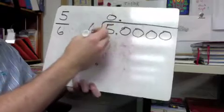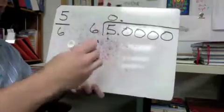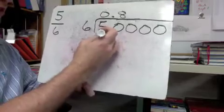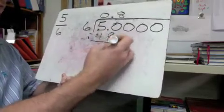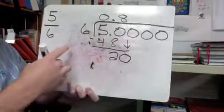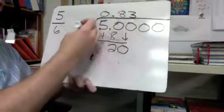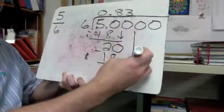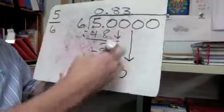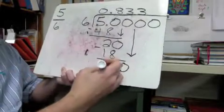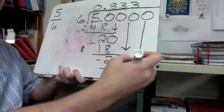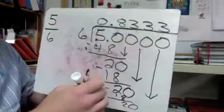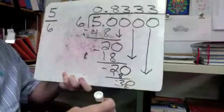Six can't go into five, so that's your zero. You don't necessarily have to do the next step since it'll be the same. Six into fifty: that's eight times — eight times six is forty-eight, subtract, remainder two, bring down zero. Six goes into twenty — that's three times; three times six is eighteen, take away, equals two. We still have a remainder so we keep going.